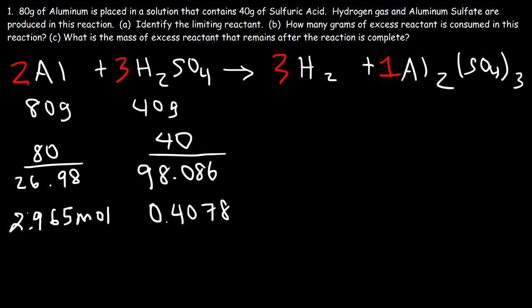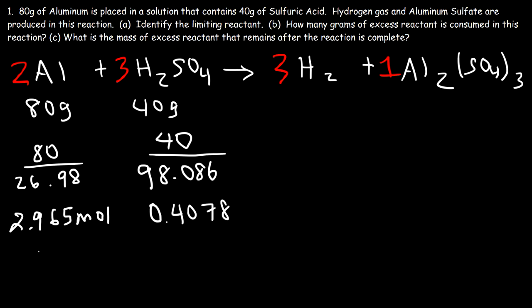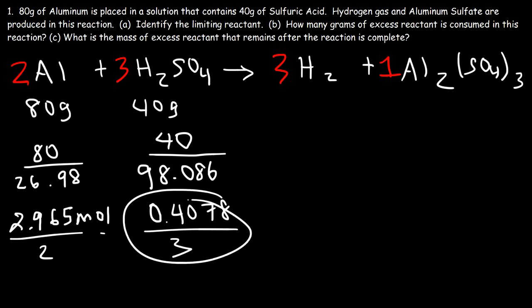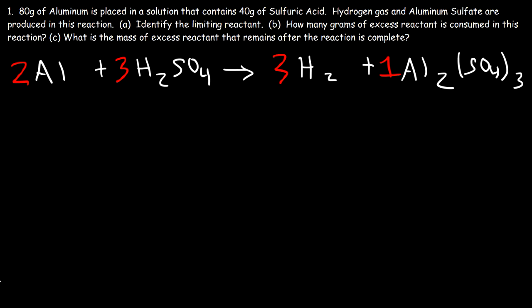Now we can see that the limiting reactant is going to be sulfuric acid — it has far fewer moles than aluminum. We also need to divide by the coefficient: 0.4078 divided by 3 gives a smaller mole-per-coefficient ratio than aluminum's. So sulfuric acid has the lowest mole-per-coefficient ratio, making H₂SO₄ the limiting reactant, which means aluminum is the excess reactant.